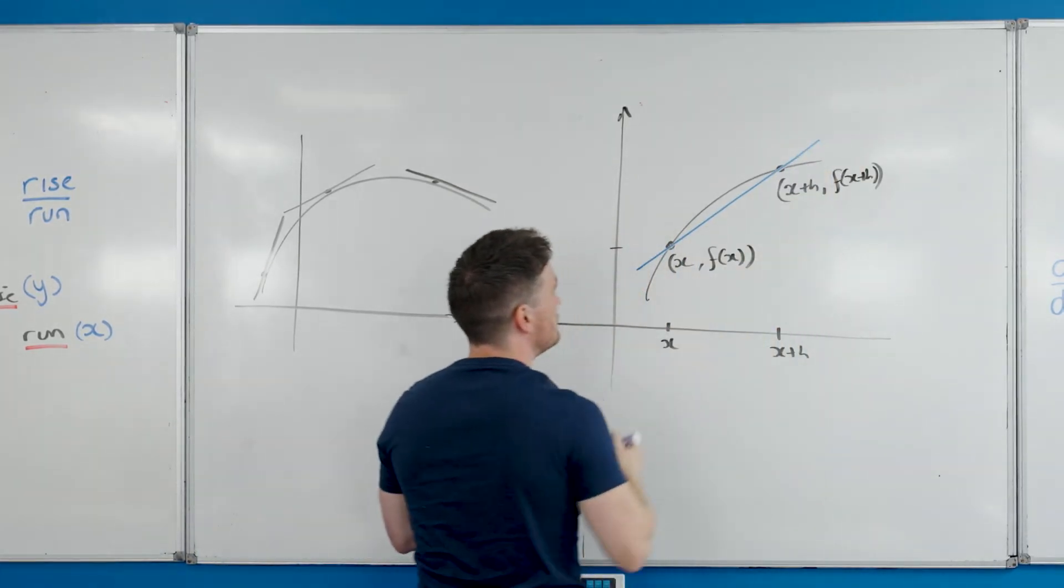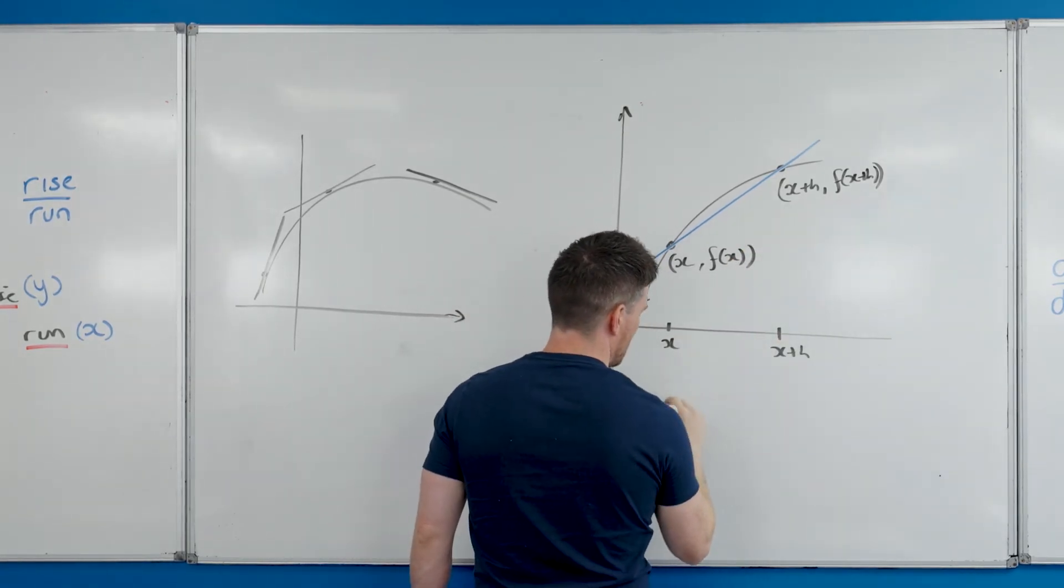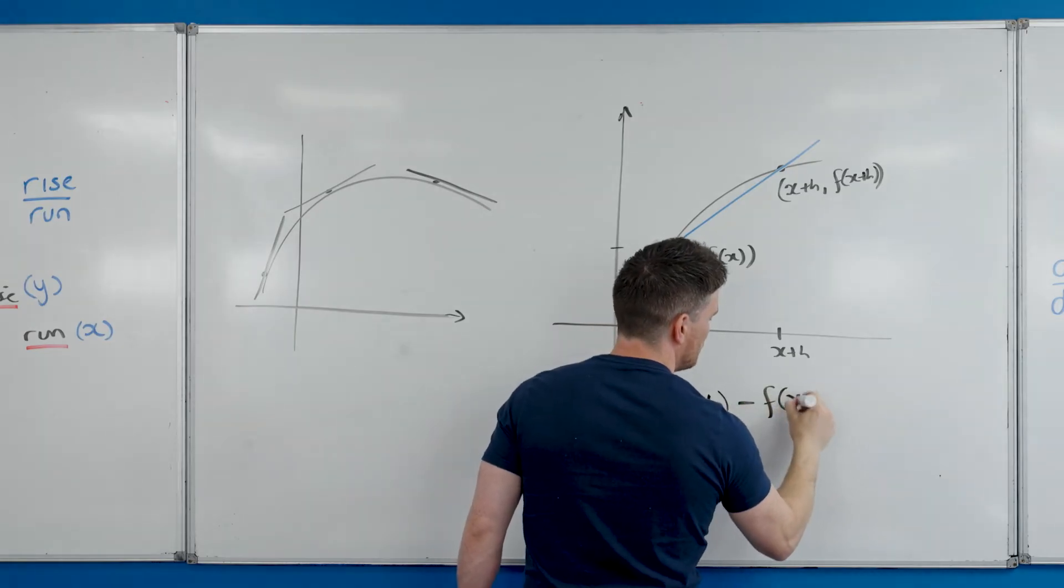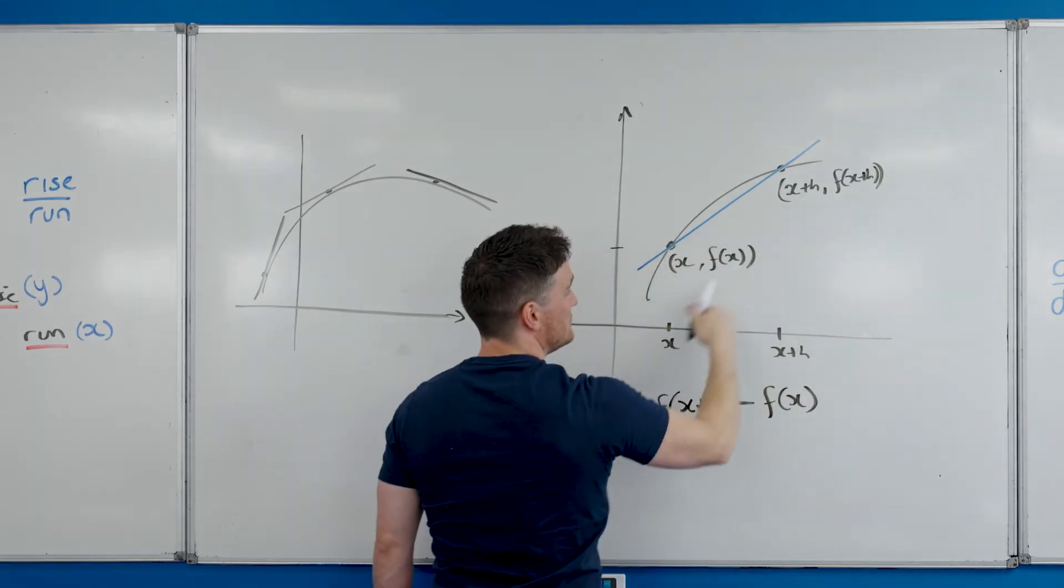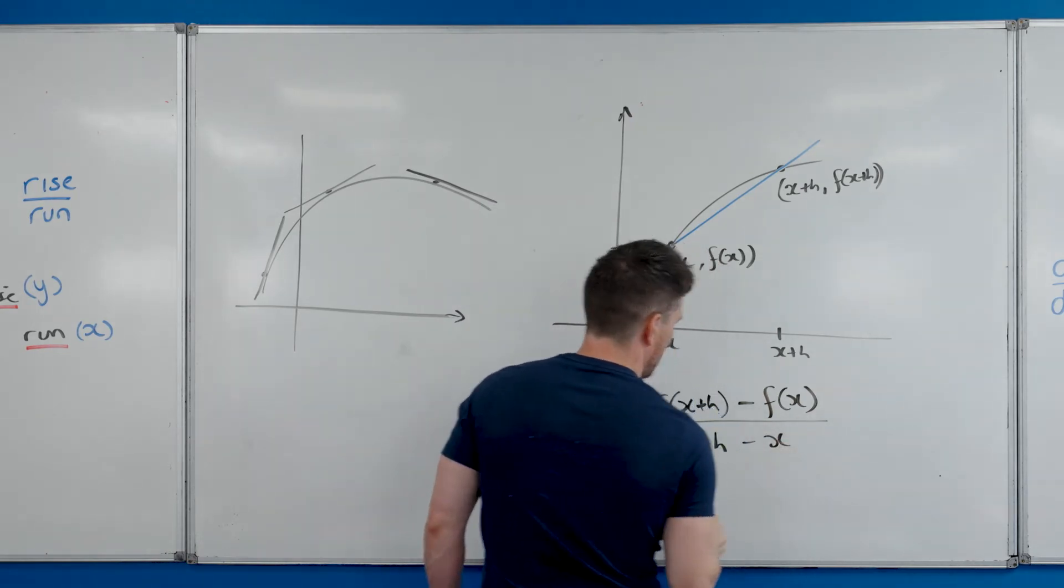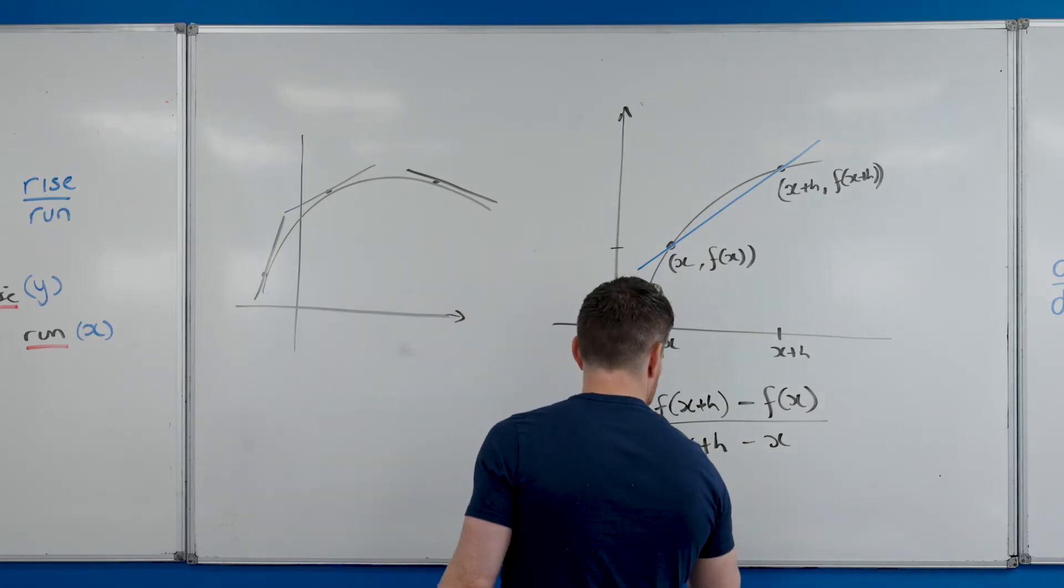The same rule is going to apply—we're going to just do slope between two points. It's going to be y2 minus y1, so f(x plus h)—that's my y2—minus my y1, over my x2 minus my x1. You'll notice the x's cancel on the bottom, and we get this lovely little equation.